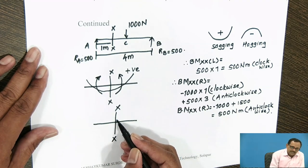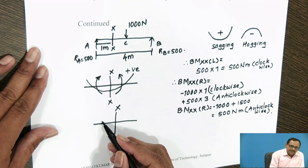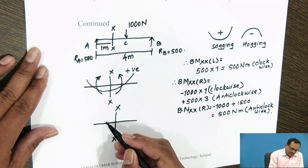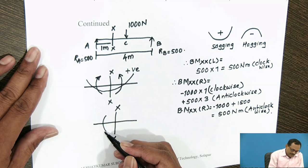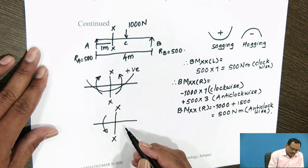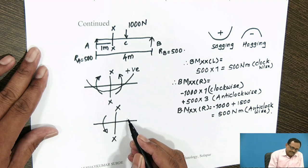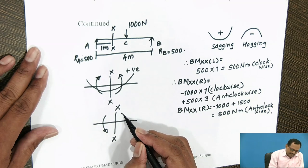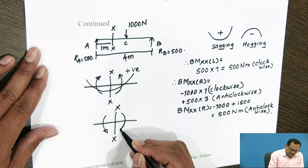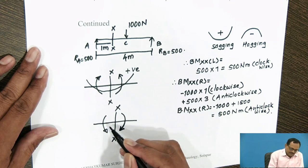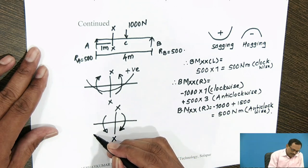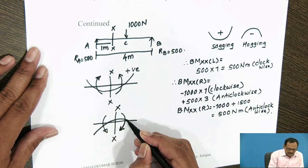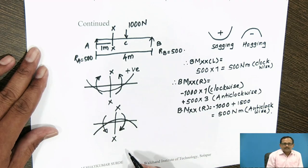Bending moment at section XX: when you refer to the left side and the moment due to forces and reactions to the left side is acting in the anticlockwise direction, such a moment tends to bend the beam to a curvature having convexity at the top.